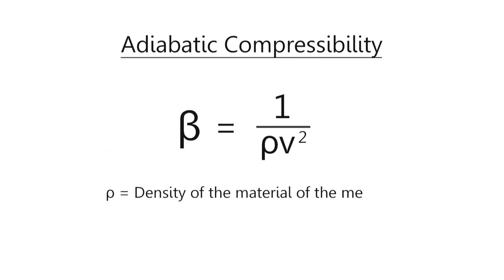The adiabatic compressibility β of the material of the sample can be calculated using the equation β = 1/(ρv²), where ρ is the density of the material of the medium and v is the velocity of the sound wave through that medium.